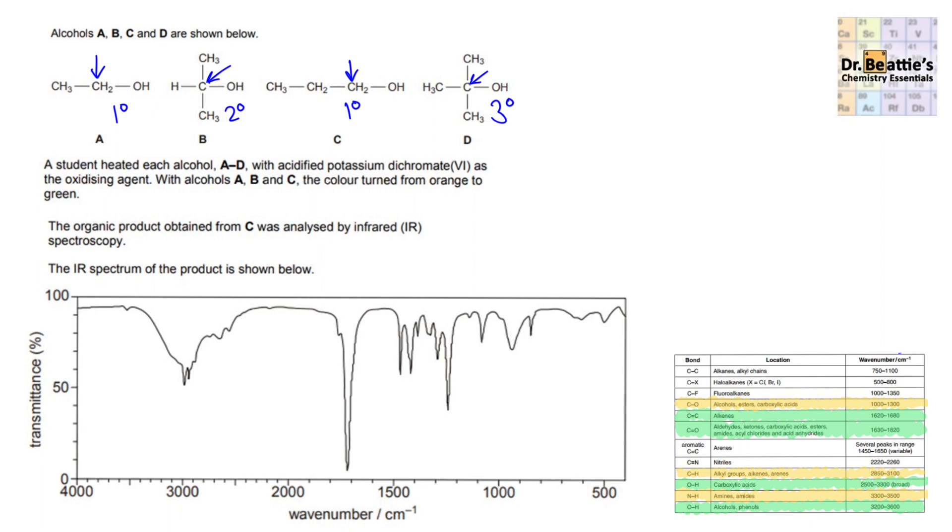When C is treated with an oxidizing agent such as potassium dichromate, and we're not quite sure whether the conditions were distillation or reflux, there could be two possible products. The first product, if it underwent distillation, would oxidize to the aldehyde. The alternative product, if it underwent vigorous oxidation conditions such as reflux, is the carboxylic acid. The only thing that differs between these two is we have a carbonyl in both, but in this carboxylic acid, we're also expecting the very broad peak of an OH of a carboxylic acid.